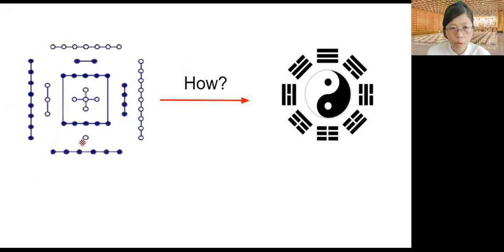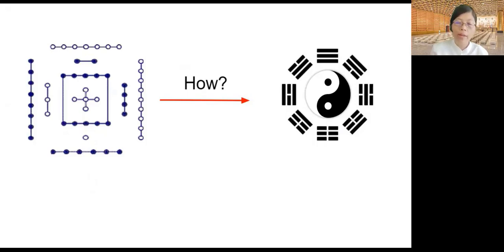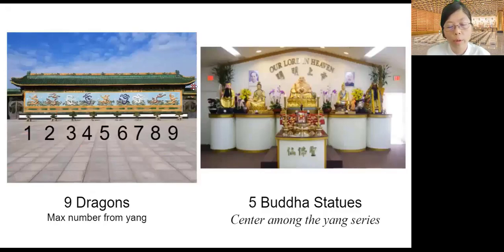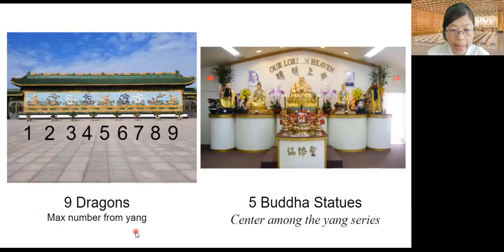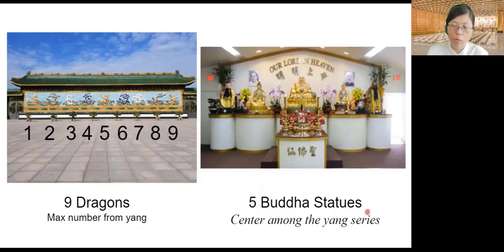Let's look at this picture — it's made out of dots. This picture is really important because if we think about our daily life, sometimes we wonder why things are made out of certain numbers. This is one of the architectural structures in a Tao Temple in Taiwan. They have a great wall, and on this great wall, it has nine dragons. Nine represents the maximum number from yang. Why nine? Let's also look at this picture: five Buddha statues. Why not three? Why not six? But it happens to be five, and five means the center among the yang series.